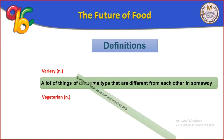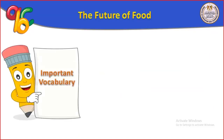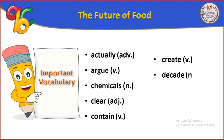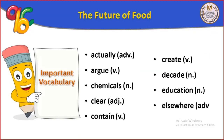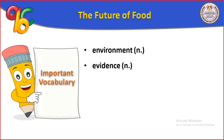Vegetarian is someone who doesn't eat meat or fish. Now we have some important vocabulary: actually, argue, chemicals (المواد الكيماوية), clear, contain, create, decade (عقد), education (تعليم), elsewhere (مكان آخر), evidence (دليل), extraordinary (غير عادي).